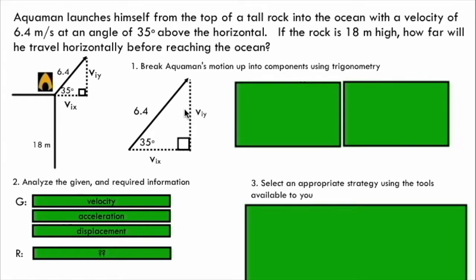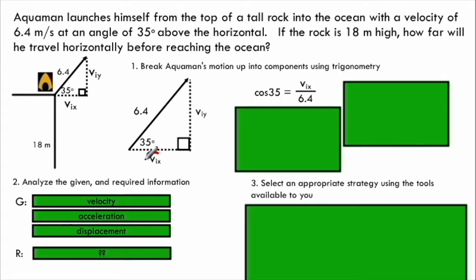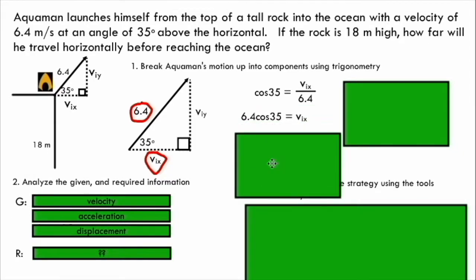Okay, so the first thing I want to do is solve for this initial velocity component in the x direction, and in order to do that I have to use my understanding of trigonometry. This is our adjacent side, this is our hypotenuse, the trig ratio relating the adjacent to the hypotenuse would be cosine. So I can solve for vix simply by multiplying 6.4 up to the other side, and if I just rewrite it in this way I've got a nice expression for the horizontal velocity component for my velocity vectors.